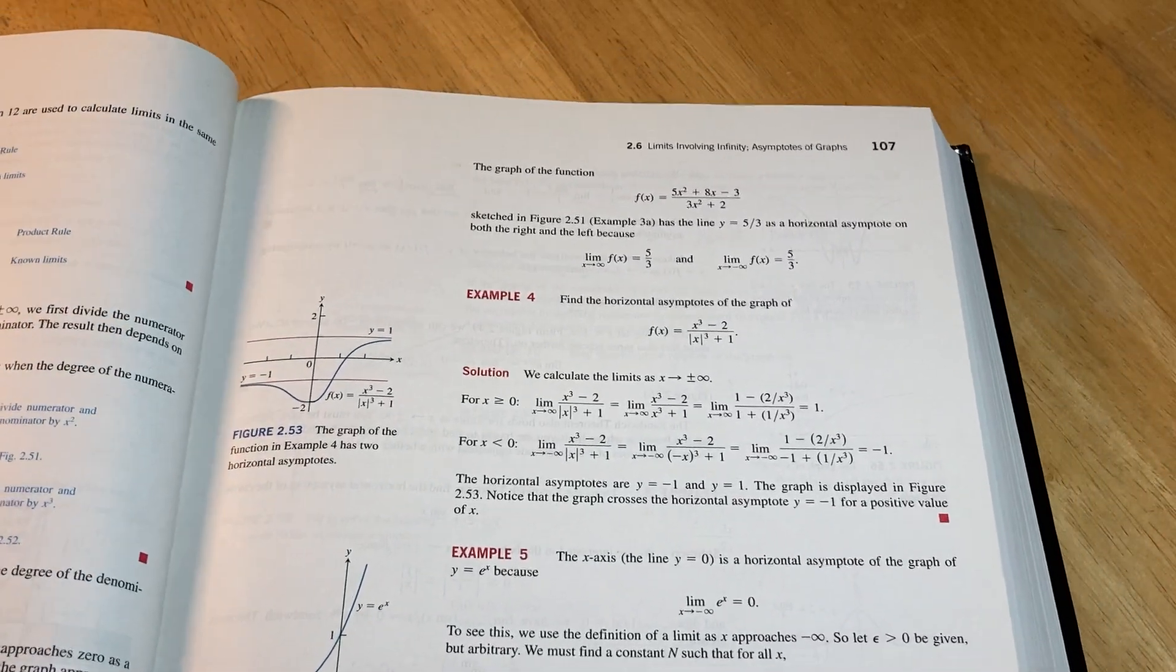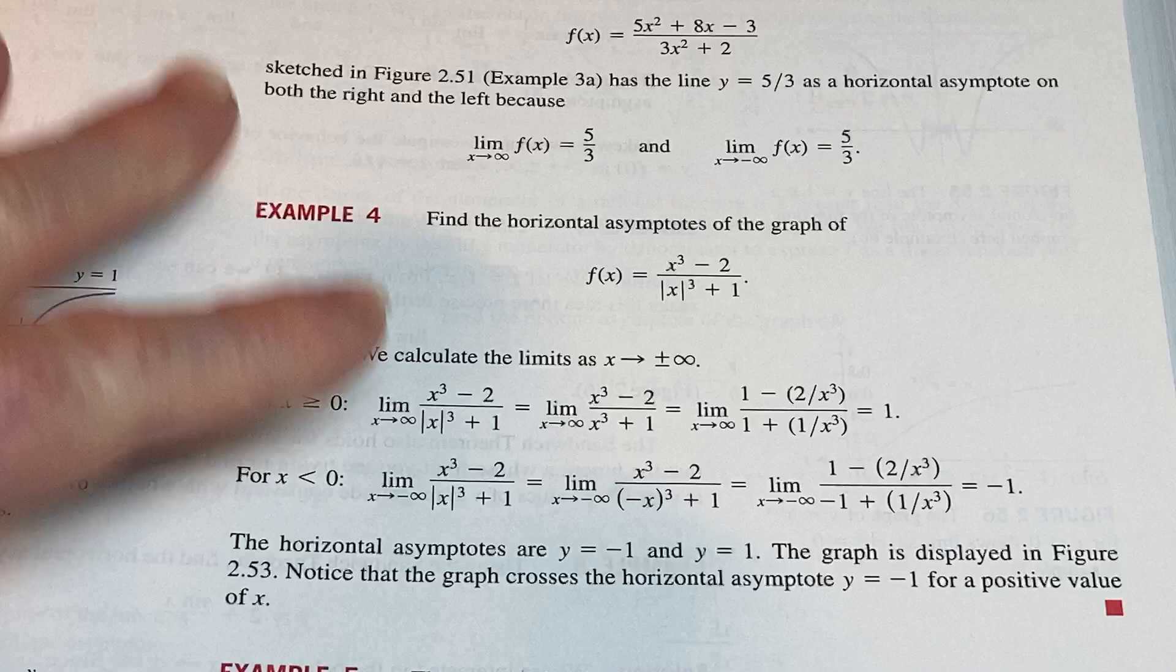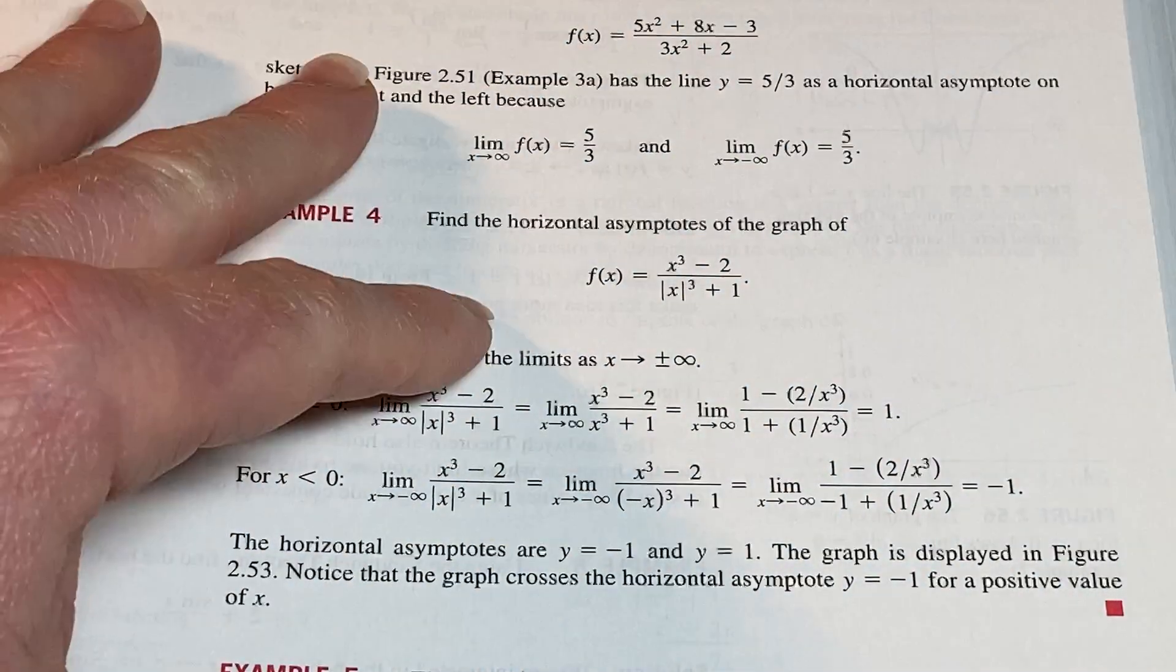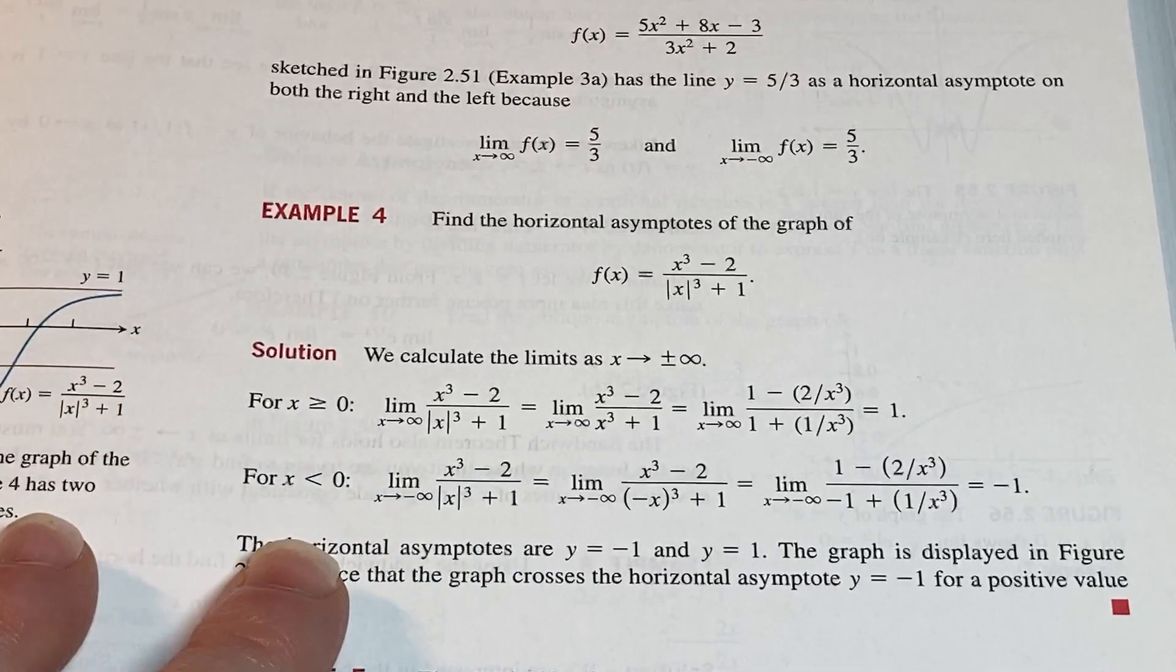And then you see more examples here. Really nice example here. Look at this one. It's got an absolute value. That's pretty cool. So there's a lot of things, and it's little stuff like this throughout the book, that I think make this book special.